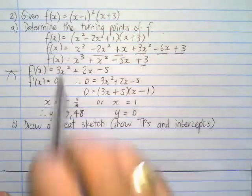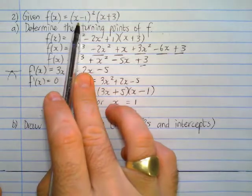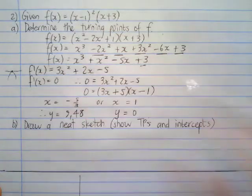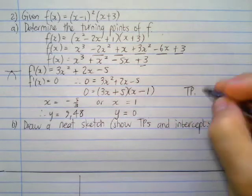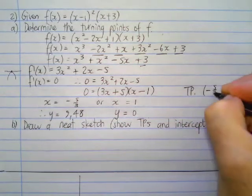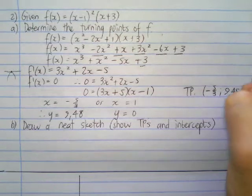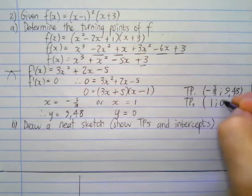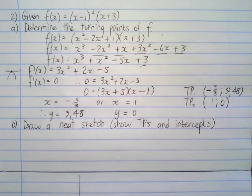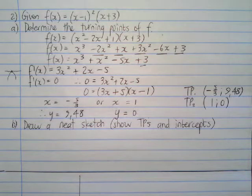So the y here, therefore y is 9.48, and when x is 1 we should know what this is going to be, but let's do it anyway. We're going to substitute a 1 and a 1 and one more 1, and we are indeed going to get 0. That should not take you by surprise because we saw that one of the x-intercepts was going to be at 1. So they are our two turning points.